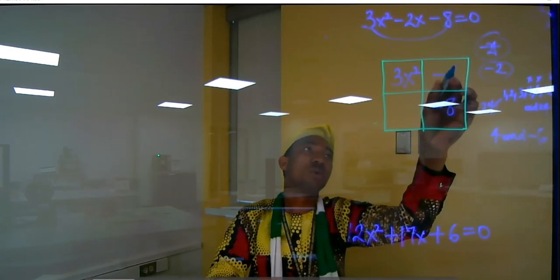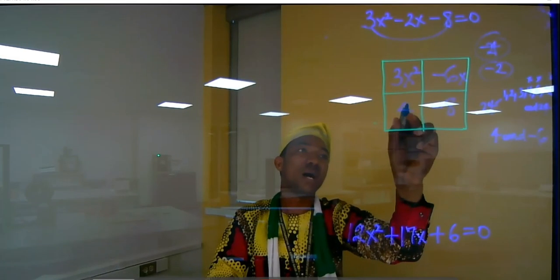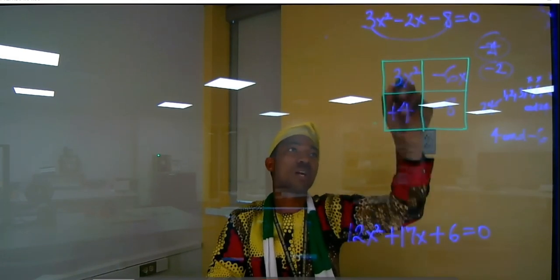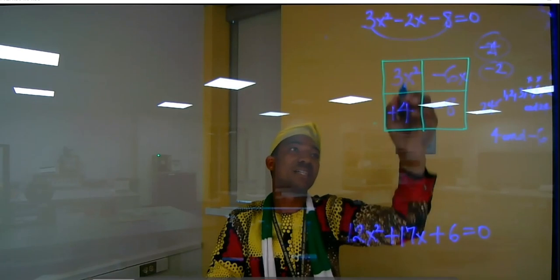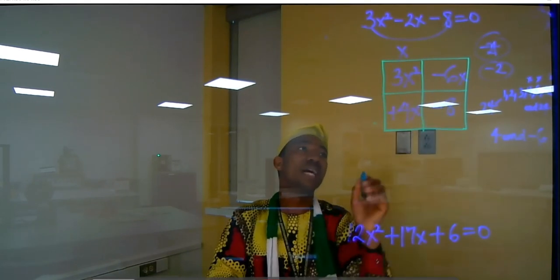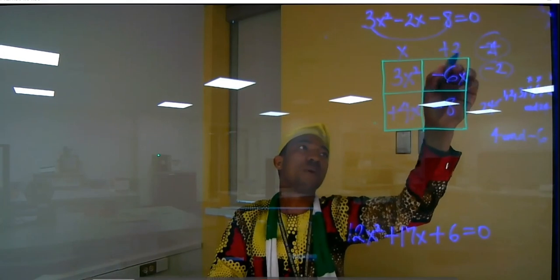So I can put minus 6s here. Then I can bring in plus 4 into this place. I want to look for the common factor. What is common here? This is S. So S is common here. What is common here? Plus 2 is common here.